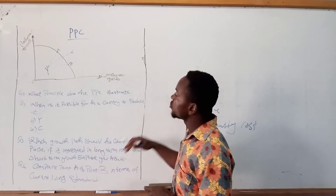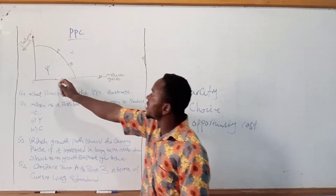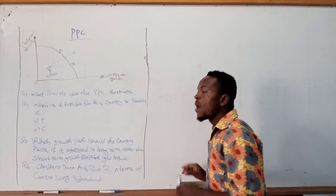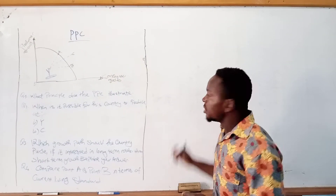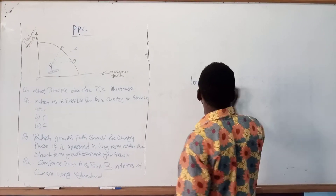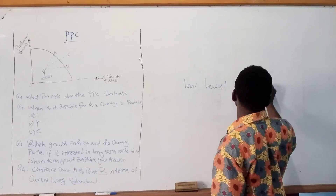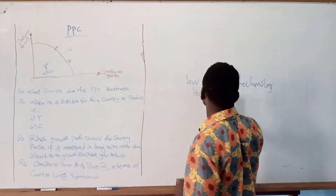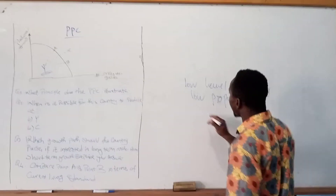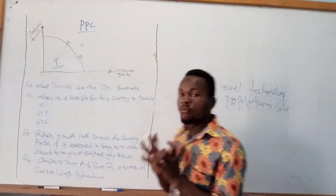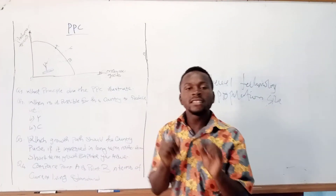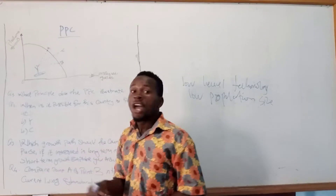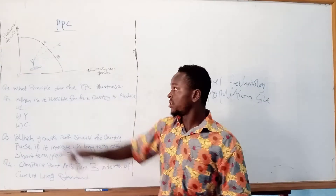The next part of the question asks: when is it possible for a country to produce at Point Y — inside the PPC? This is possible when there is a low level of technology, or when there is a low or small population size, or when resources are idle. When there is underutilization of economic resources, the country is going to be producing inside the PPC.